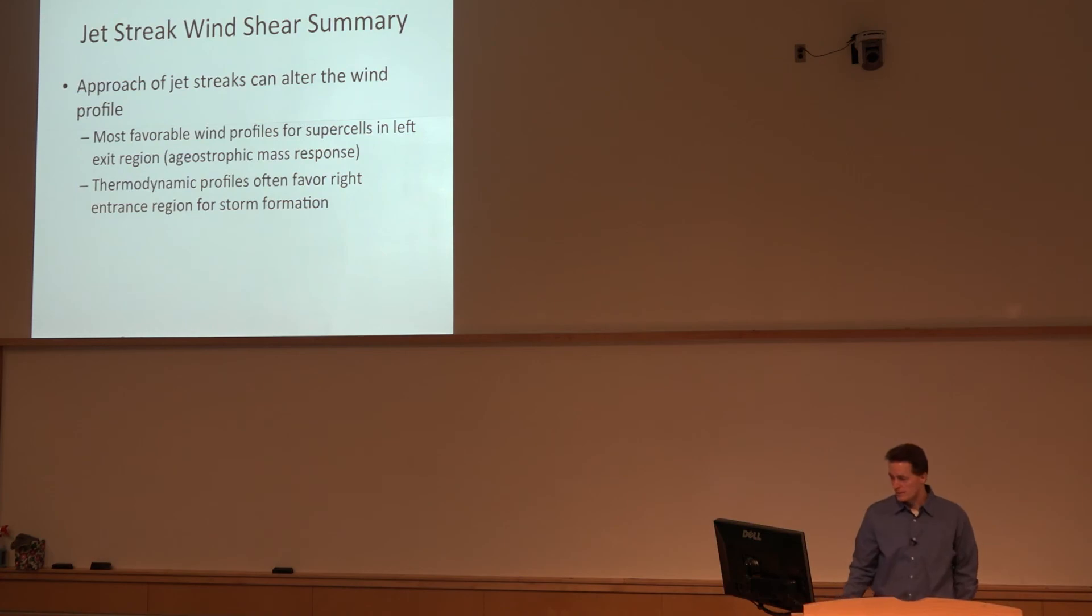To summarize, you get the most favorable profiles for supercells through this mass adjustment in the left exit region. But thermodynamically, if you consider geography, a typical jet streak moving from west to east, the anticyclonic side of the jet is also closer to the moisture source. You've had longer with moisture advection. Oftentimes it's the right entrance region that is the most unstable thermodynamically. You don't have the same mass response, but you actually have a better thermodynamic profile for storms often. So the left exit region, the question is can we generate the buoyancy to support severe storms?